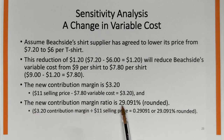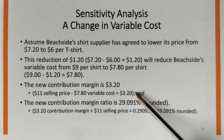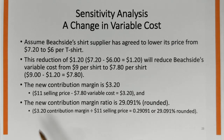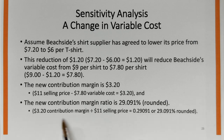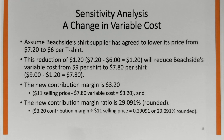The new contribution margin ratio is $3.20 divided by $11 = 29.091%. Another complex percentage — for real work, I'd use the $3.20 per unit figure. Note we don't have total sales figures available here, so we must use per unit amounts. You can always use per unit amounts to derive the contribution margin ratio when total amounts aren't available.